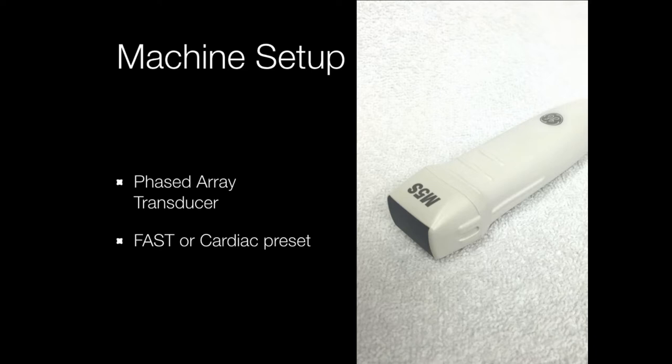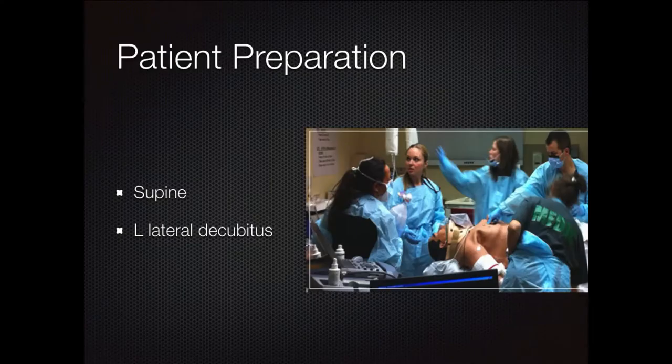Presets set all the machine functions to optimize for what you're intending to look for, making it easy to do in a hurry. The most stressful thing in cardiac ultrasound is when you have someone looking over your shoulder wanting your findings so they can intervene. In the trauma setting with that unstable patient and the trauma surgeon asking 'what do you find?' — use your presets.